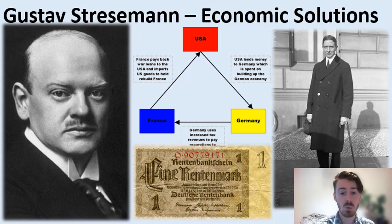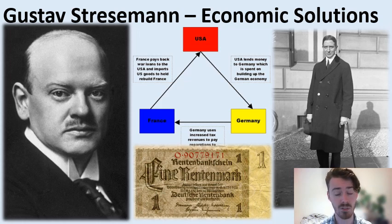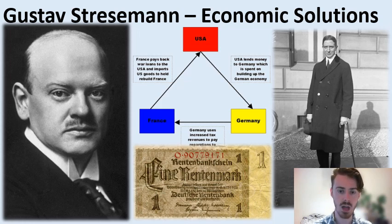By 1923, Germany was in an awful situation — struggling massively. Hyperinflation, invasion of the Ruhr, murders and uprisings, the Munich Putsch. It's not a good time for the Weimar government. Someone needs to solve it, and our study of politics needs to know: how do you even solve those problems?